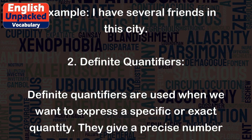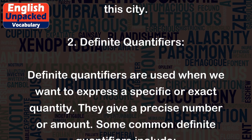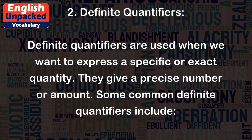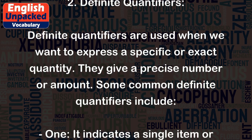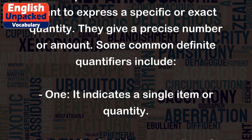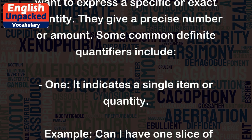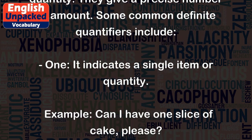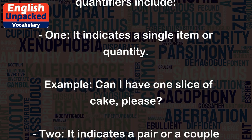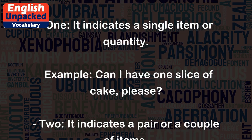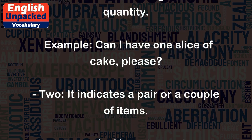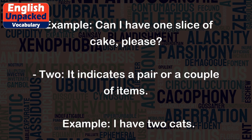Definite quantifiers are used when we want to express a specific or exact quantity. They give a precise number or amount. Some common definite quantifiers include: '1' — it indicates a single item or quantity. Example: Can I have one slice of cake, please?